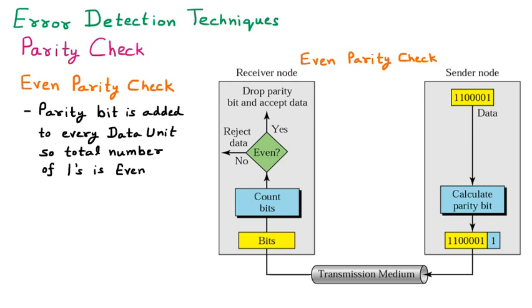Let's suppose there are two parts: the sender node which sends the data, and the receiver node which receives the data. At the sender side, we have some data: 110001. This is the data we want to send.